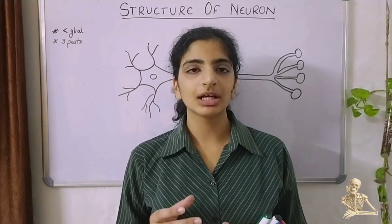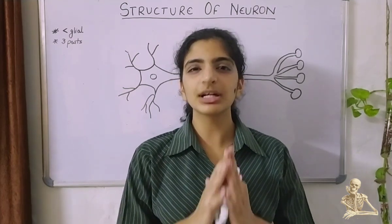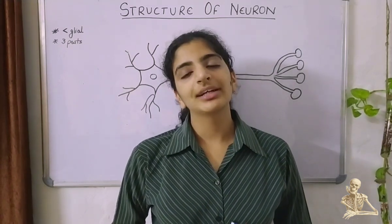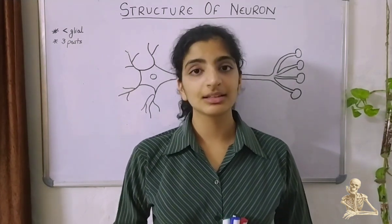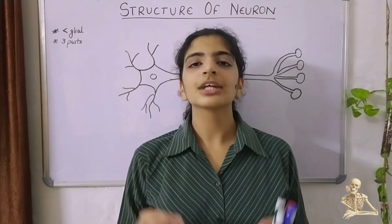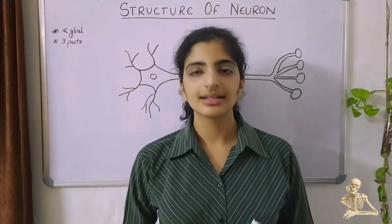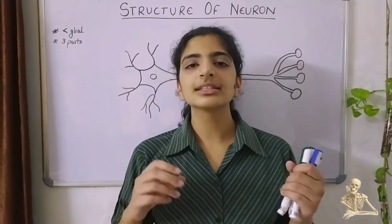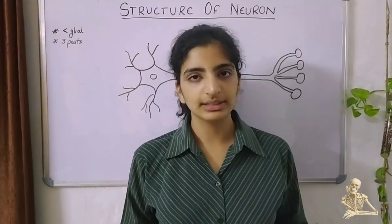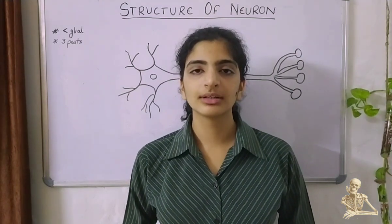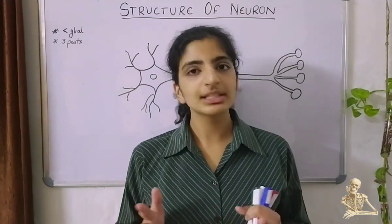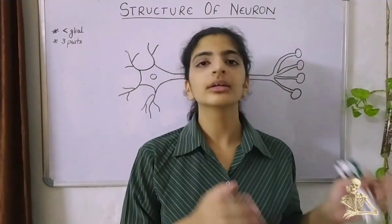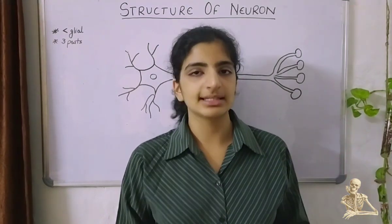In the nervous system, neurons are present in much lesser numbers than the glial cells, and a neuron can be divided into three different parts. The first are the dendrites, which actually receive the nerve impulse. The second is the cell body — soma or perikaryon — which consists of all the organelles and the nucleus of the neuron. Thirdly, there is the axon, the region from which the nerve impulse is transmitted from one neuron to another, or to a muscle or any receptor organ.